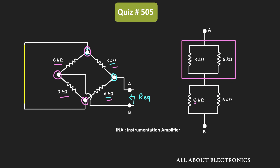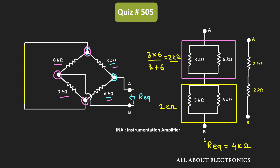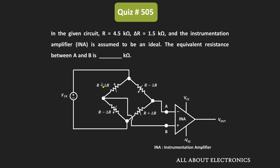So now it is easy to find the equivalent resistance between these two nodes. The parallel combination of the two resistors equals 3 times 6 divided by 3 plus 6 kilo ohm, which is equal to 2 kilo ohm. Likewise, the other parallel combination is also equal to 2 kilo ohm. These two 2 kilo ohm resistors are connected in series, so the equivalent resistance between terminal A and B is equal to 4 kilo ohm.